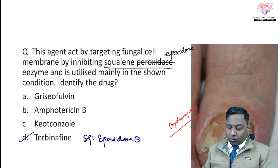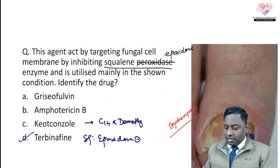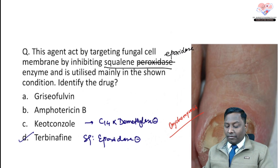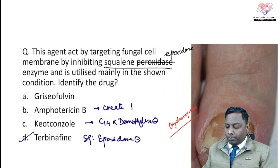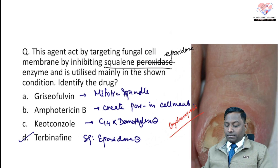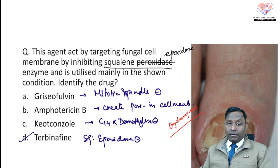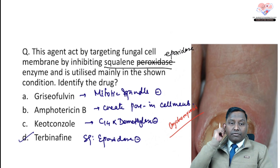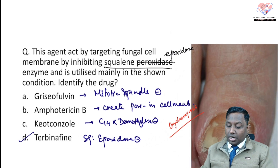For comparison: ketoconazole is a C14-alpha demethylase inhibitor; amphotericin B acts by creating pores in the fungal cell membrane and is a cidal agent; griseofulvin is a mitotic spindle inhibitor that prevents fungal cell division. Griseofulvin can also be used in dermatophytosis, but when the question specifies squalene epoxidase inhibitor, the answer is directly terbinafine.